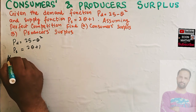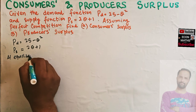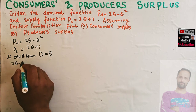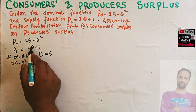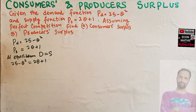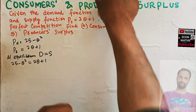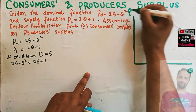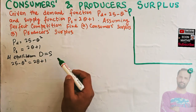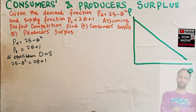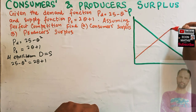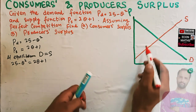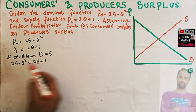At equilibrium, demand is equal to supply. So demand, which is 25 minus q squared, should be equal to supply, which is 2q + 1. Let me also draw this graphically to get a sense. We have quantity on one axis and price on the other axis. At equilibrium, demand equals supply — this is our demand curve and this is our supply curve.